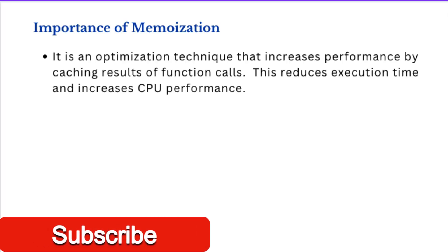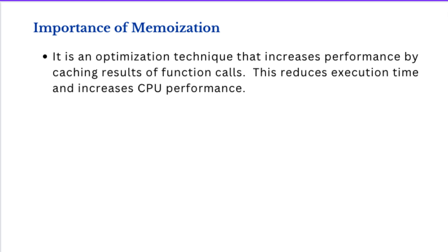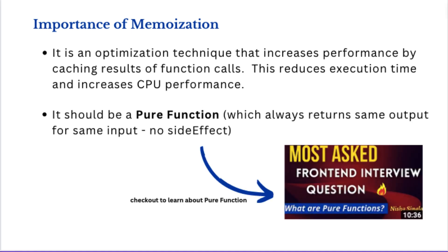When you implement memoization, it has lots of importance. It will reduce your execution time and increase CPU performance. The memoized function should be a pure function, because we are going to store the result in a cache. Pure means for the same input, your output should always be the same — function execution does not mutate. When called with a certain input, it should always return the same value regardless of how many times the function is called.